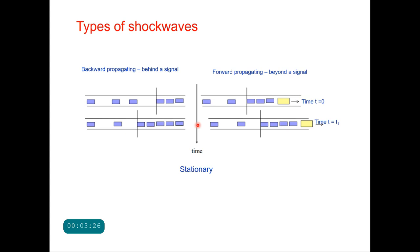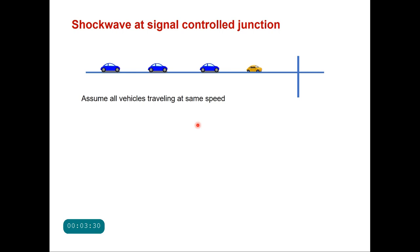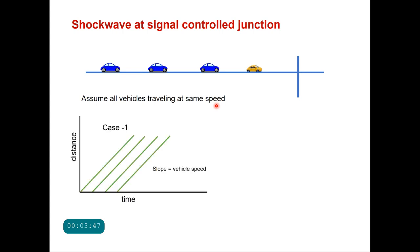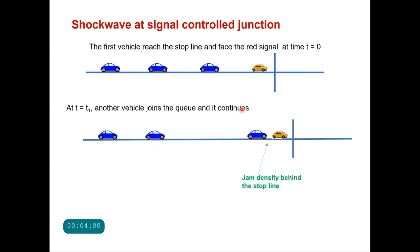Now consider a highway where vehicles are traveling at some speed, and for simplicity let us assume that all vehicles are traveling at the same speed. The time-space diagram for these vehicles will be parallel lines, and the slope of each line will be the speed of the stream. Now this stream meets a signal-controlled intersection along the highway, and let us assume that the first vehicle will reach the stop line and face the red light at time t equals zero.